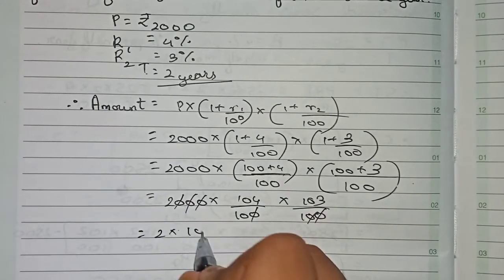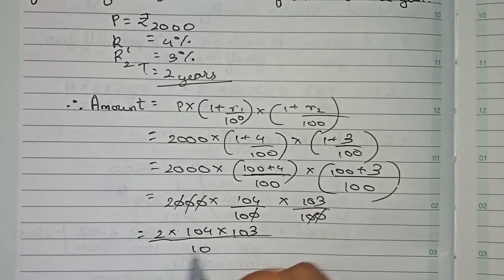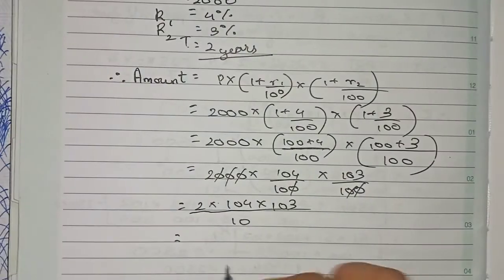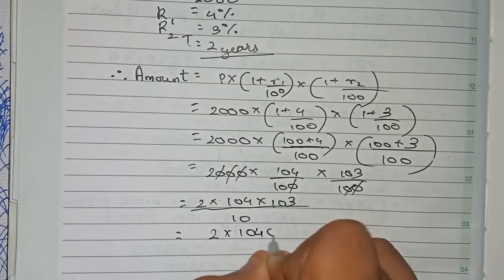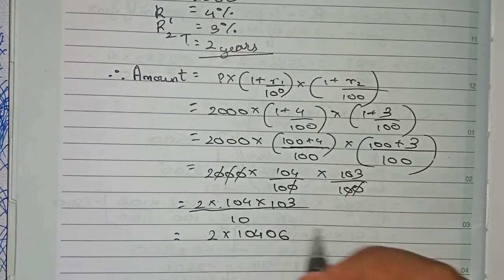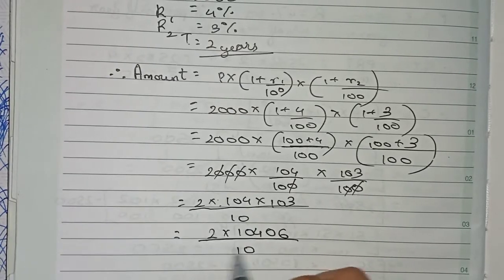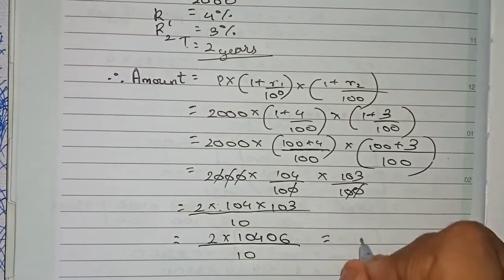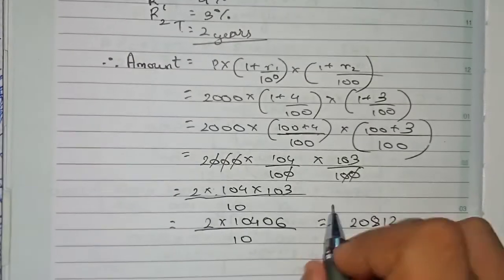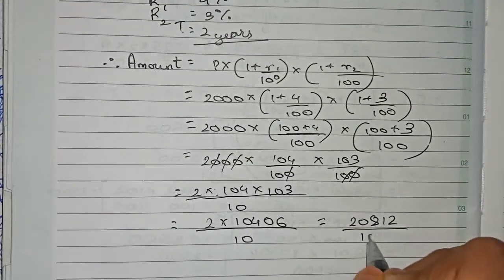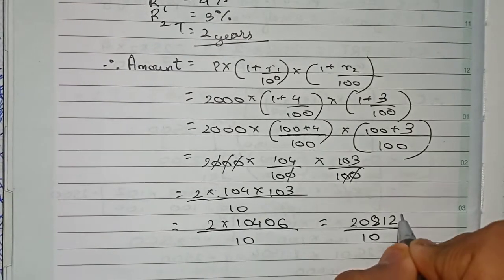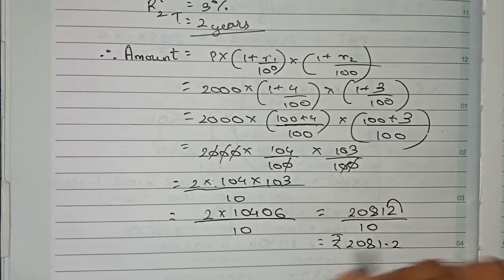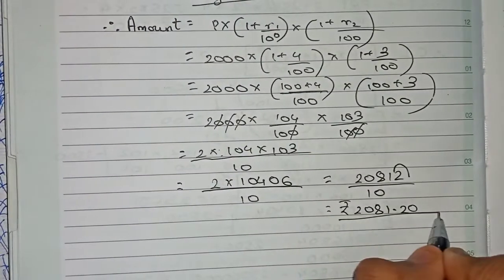We keep the 10 in the denominator for easier calculation. Multiplying 2 × 104 × 103 gives 21,412. Dividing by 10 gives one decimal place, so the final amount is rupees 2081.20.